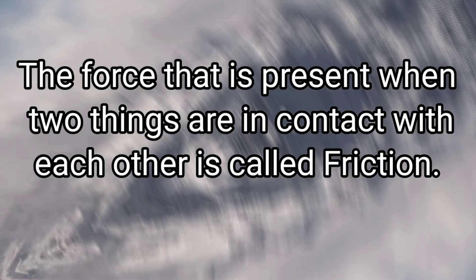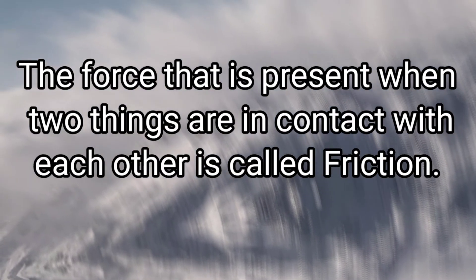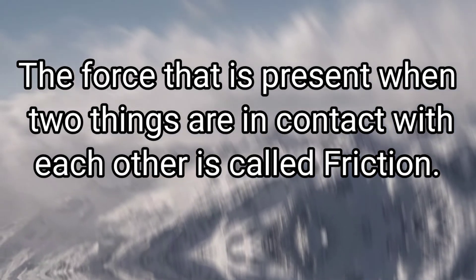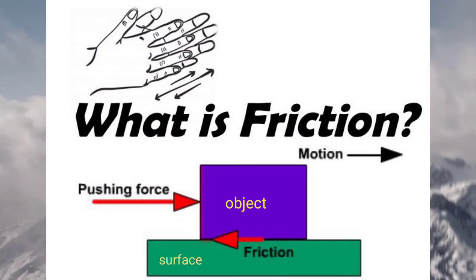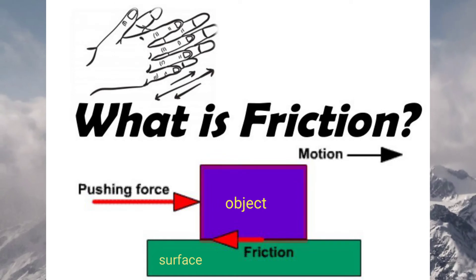The force that is present when two things are in contact with each other is called friction. When an object is in contact with a surface, a force called force of friction acts between them. This force resists the motion of the object on the surface. As a result, the object either slows down or stops moving.